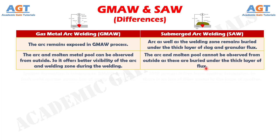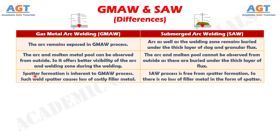Number 8: Spatter formation is inherent to the gas metal arc welding process. Such weld spatter causes loss of costly filler metal. Whereas the submerged arc welding process is free from spatter formation, so there is no loss of filler metal in the form of spatter.